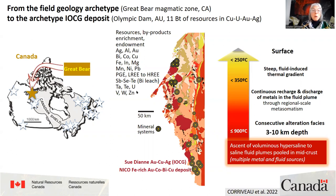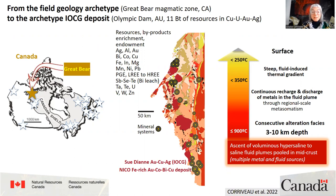In the Great Bear, we were able to map a whole series of mineral systems, define and illustrate their various resources, by-product, enrichment, and endowment in terms of the alteration species that host them — using not only the mineral system, but also the NICO iron-rich gold-cobalt-bismuth-copper deposit, as well as the Sudayan gold-copper-silver OCG deposit.